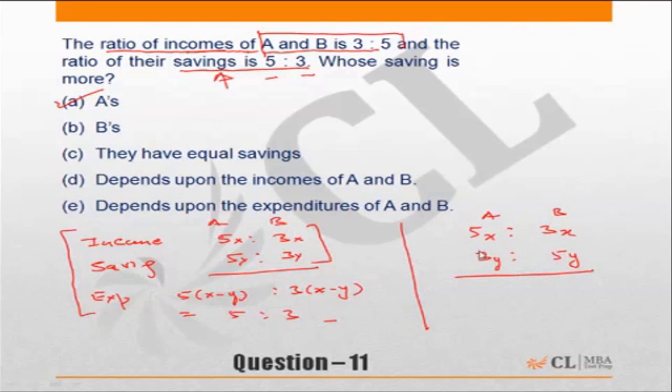So ratio of expenditure will be 5x minus 3y is to 3x minus 5y. So we do not know whose saving is more, whose expenditure is more. While here we could say very clearly because x minus y gets cancelled out, in this particular question it may not be possible to say who is who out of the two. A can have a greater amount of expenditure.